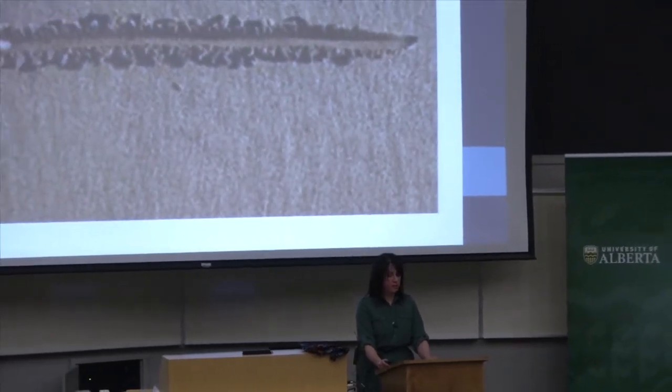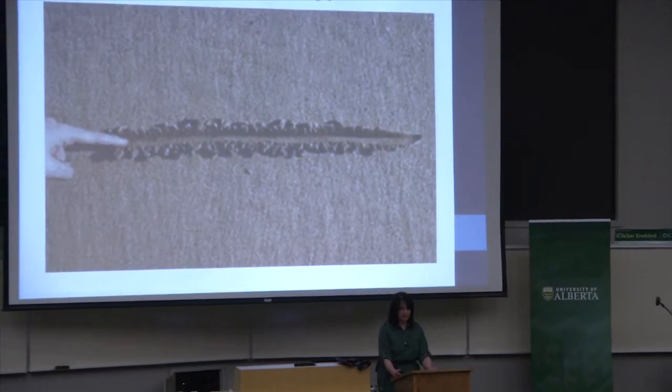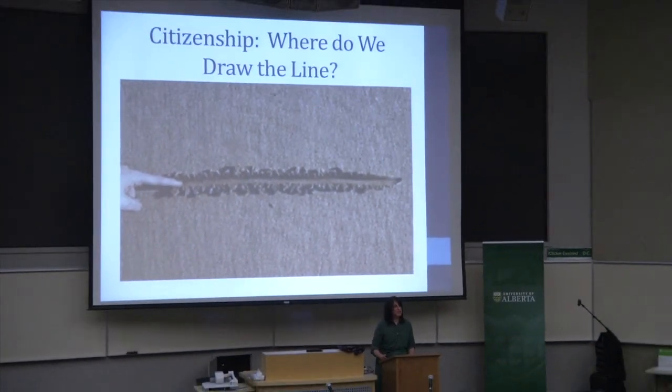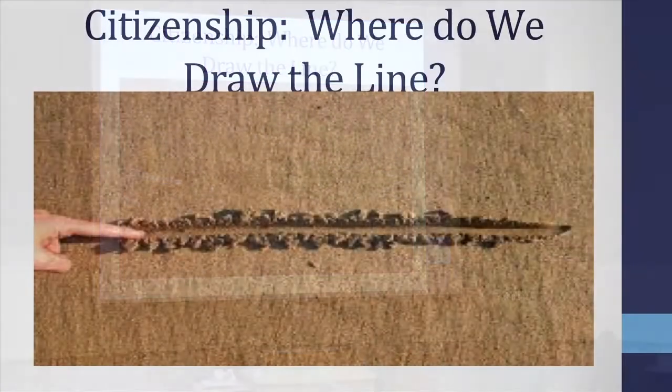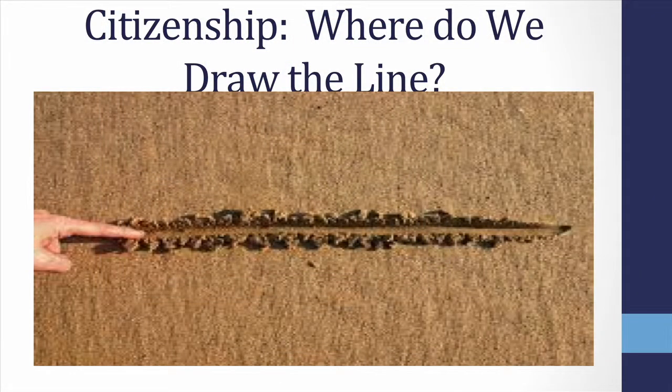To conclude, there are a number of trends which speak to ways in which both formal and substantive citizenship are being rebordered in the 21st century, with specific implications for incoming immigrants and racialized minorities. In this way, the boundaries of exclusion are being reinforced in ways that make it a very good time for all Canadians to be asking: where do we draw the line?